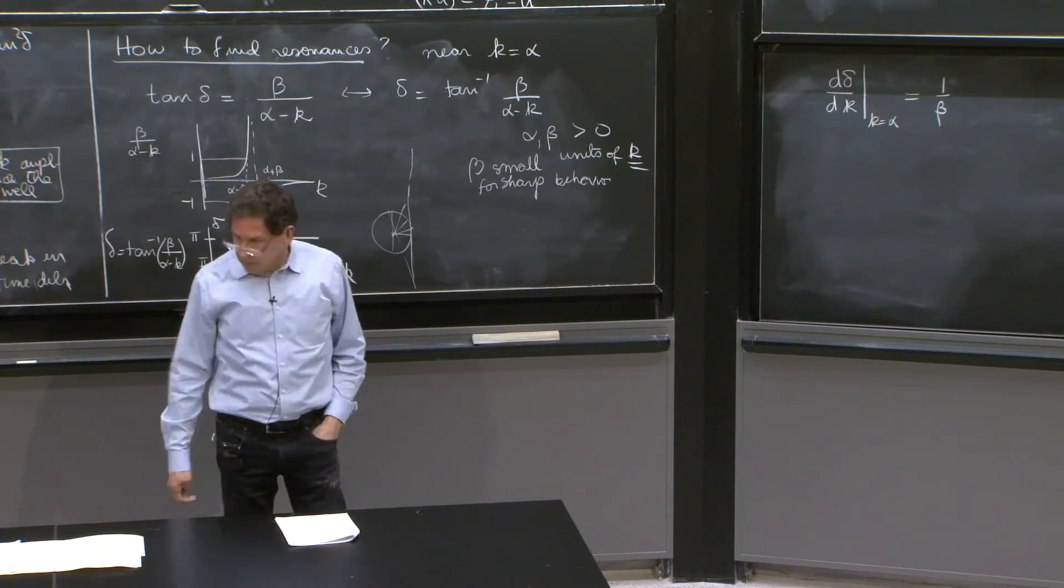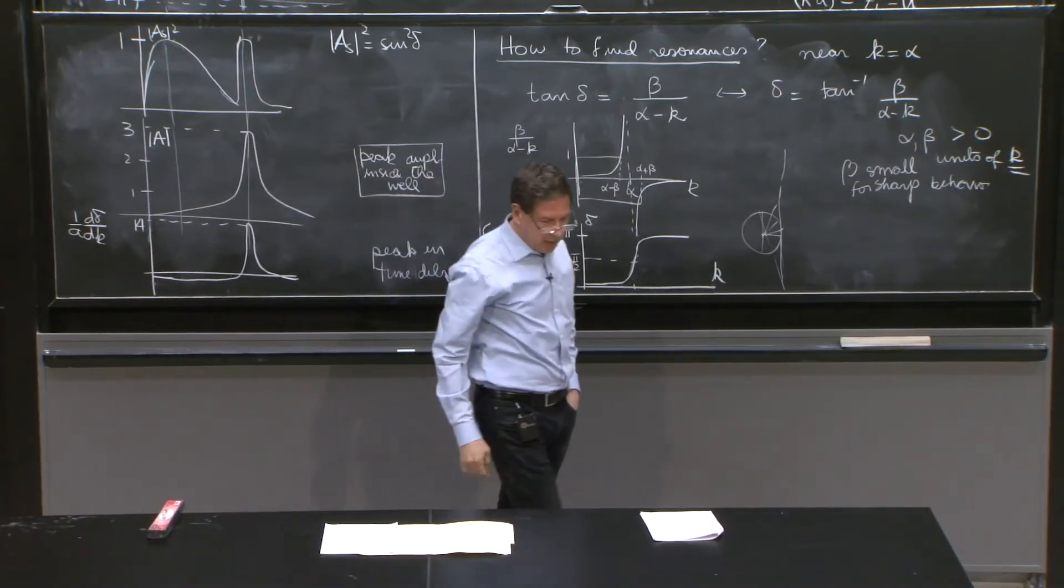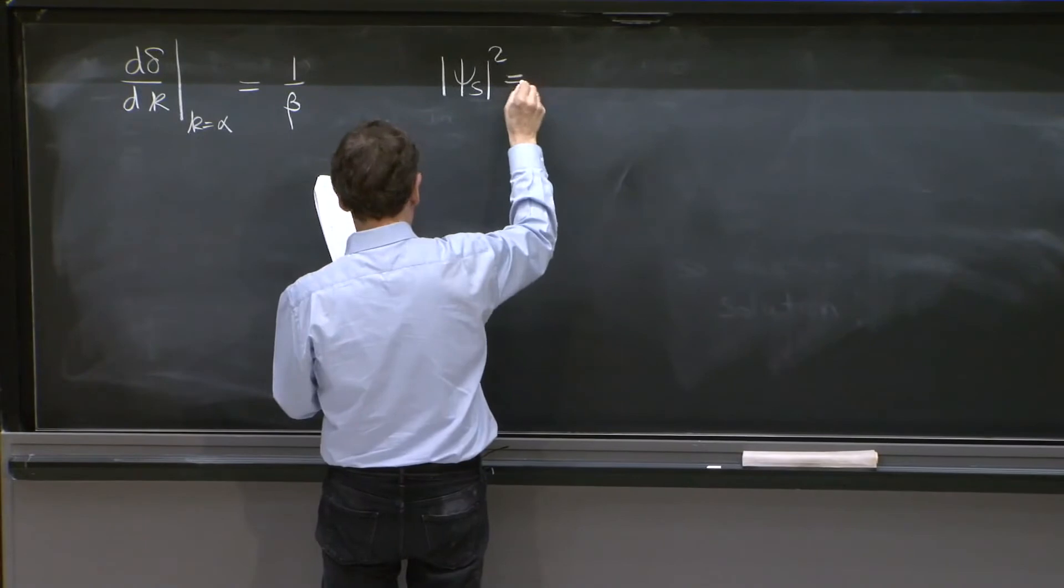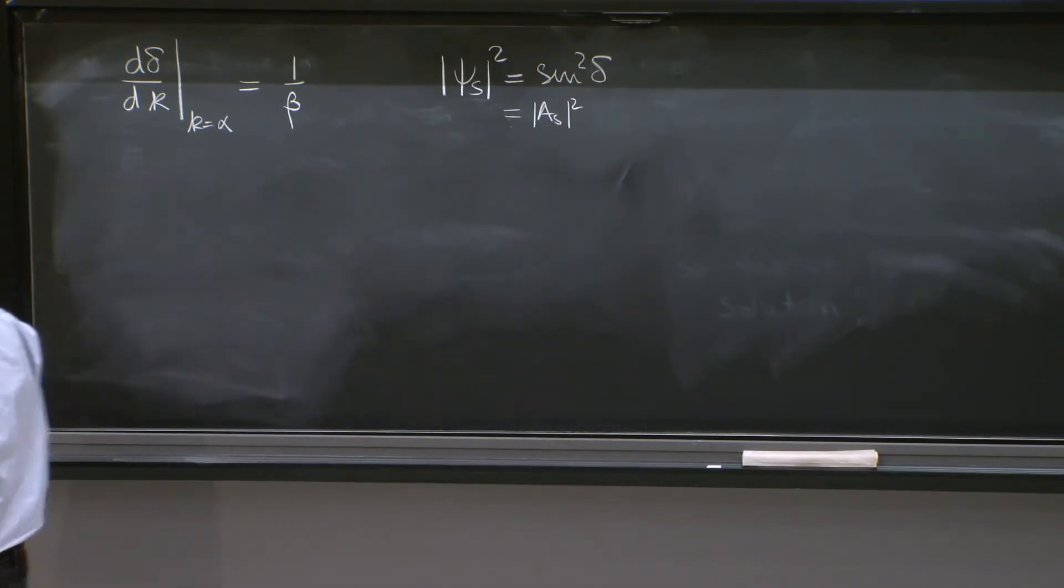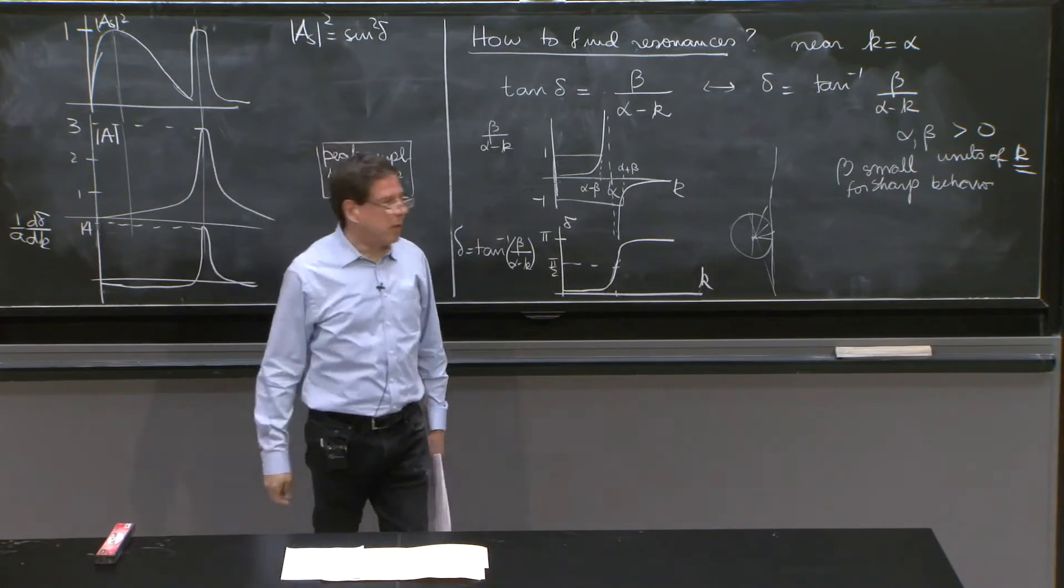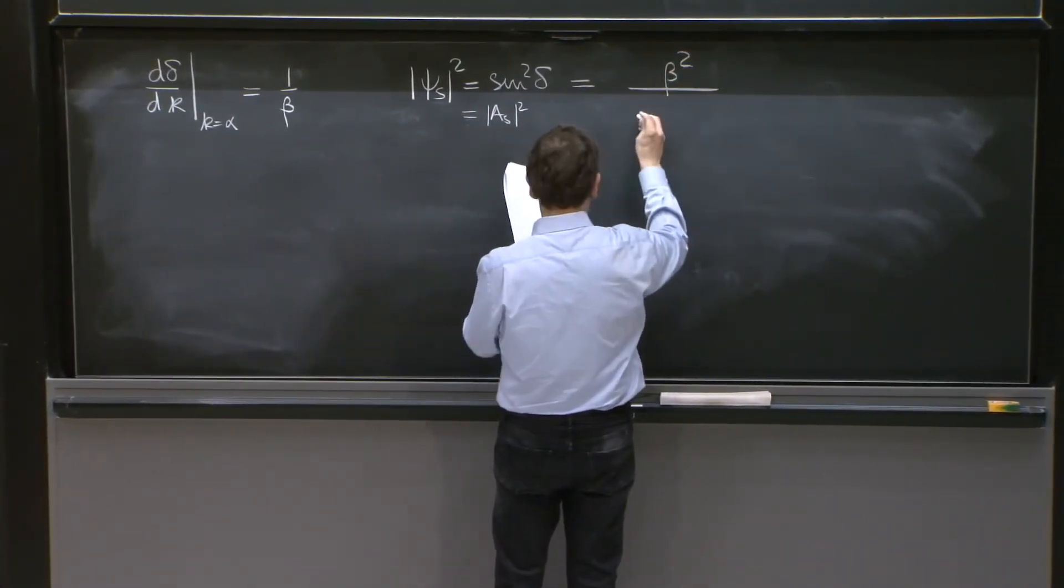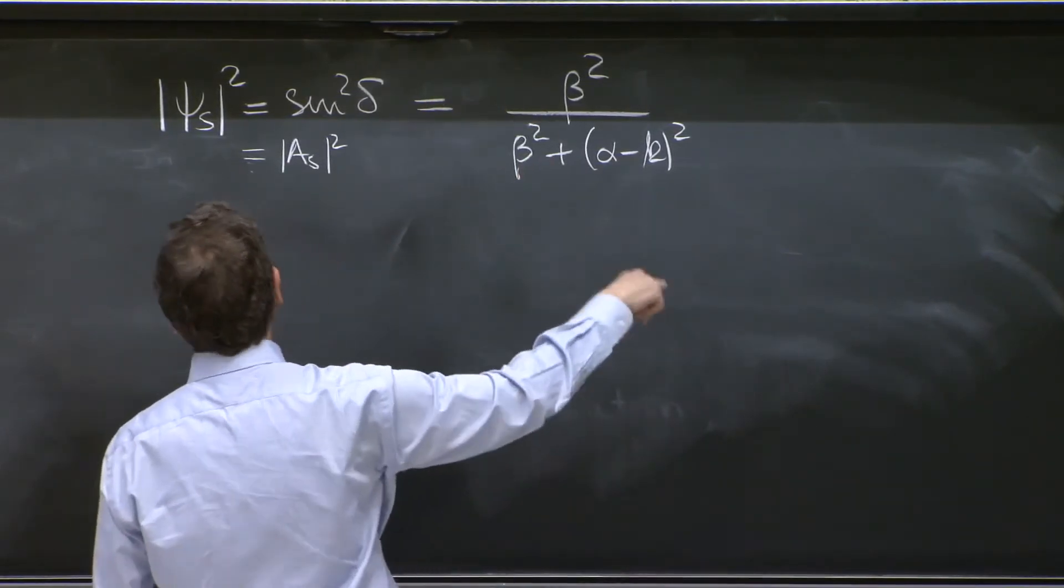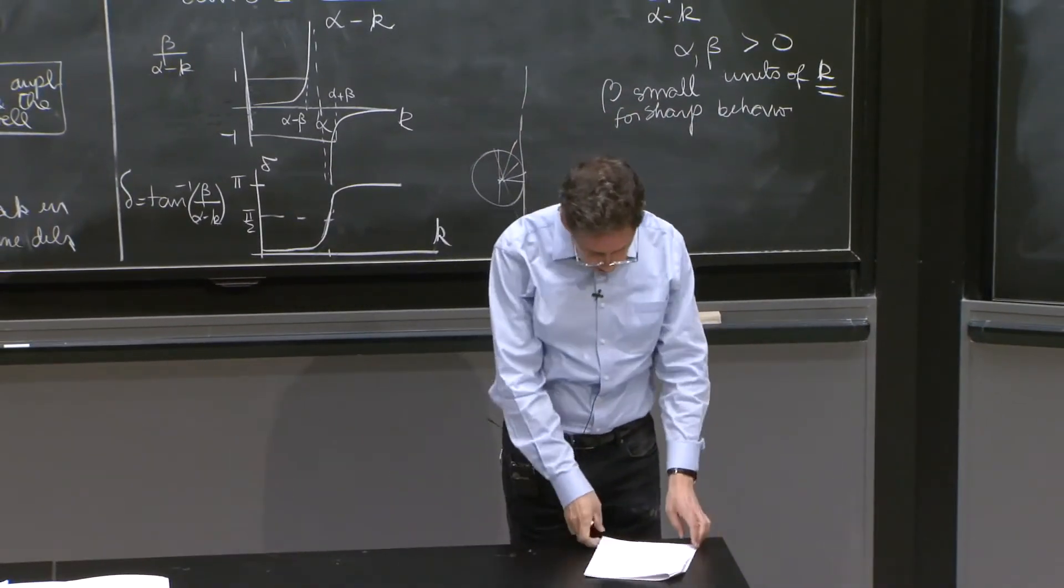The other quantity that is nice to understand is how does the scattering amplitude behave near the resonance. So what is the value of |AS|²? That's the absolute value of ψS squared, which is sin² δ. That's the same thing as AS squared. Well, you know what is the tangent of δ. A little trigonometric play that you should be able to do it, and it can give you the sine squared δ. And here is the answer: it's β² over β² plus (α minus k)². Kind of a nice, almost bell shape. Of course, it's polynomial, but it looks a little like just a nice symmetric shape around α equal k.